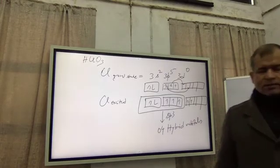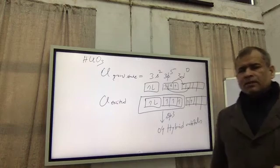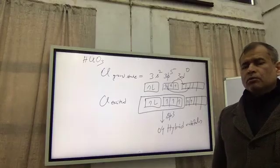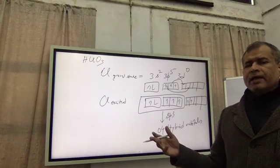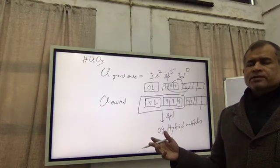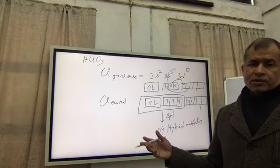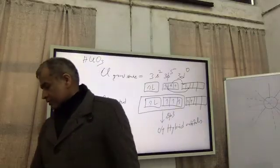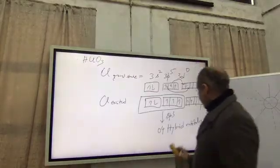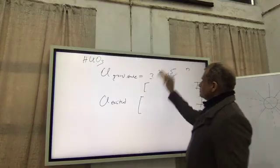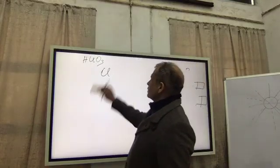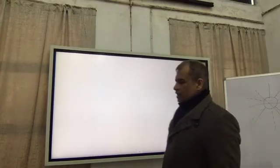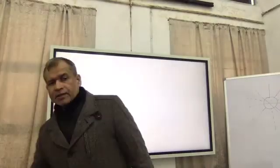Hybrid orbitals have 2 properties. Number 1, they always make sigma bonds. And number 2, they try to remain as far as possible in space from each other. So you have 4 hybrid orbitals, and from any central atom, 4 lines can be drawn at a maximum separation of 109 degrees 28 minutes, that is the tetrahedral angle.